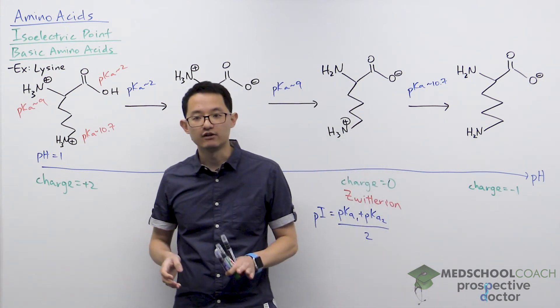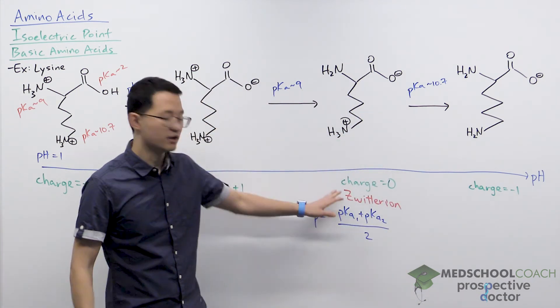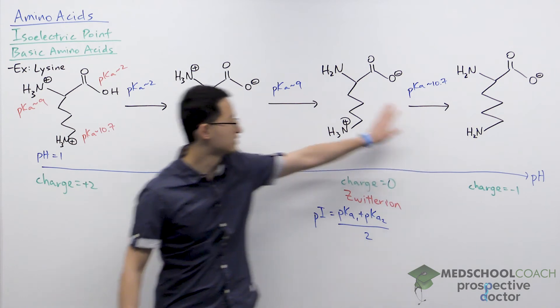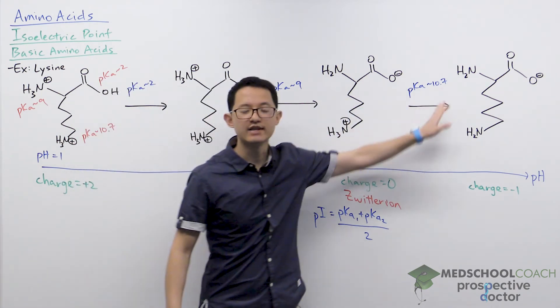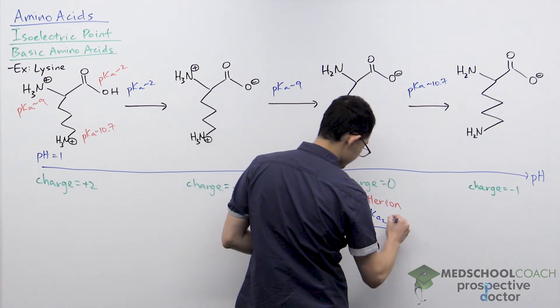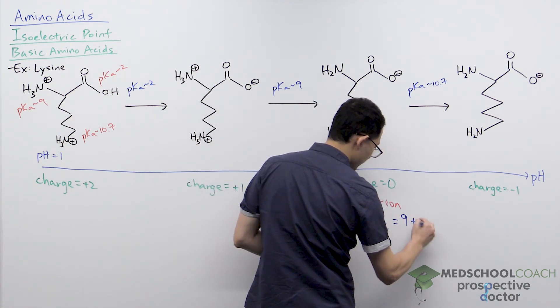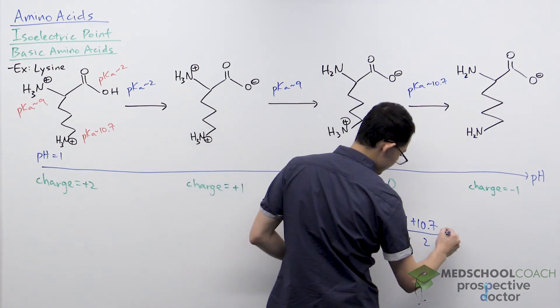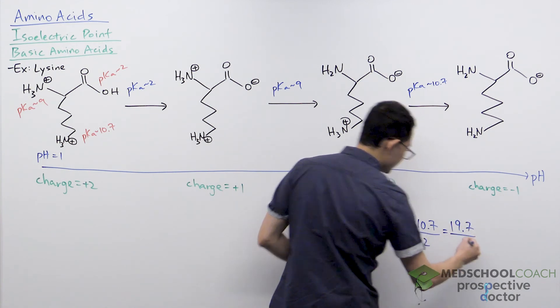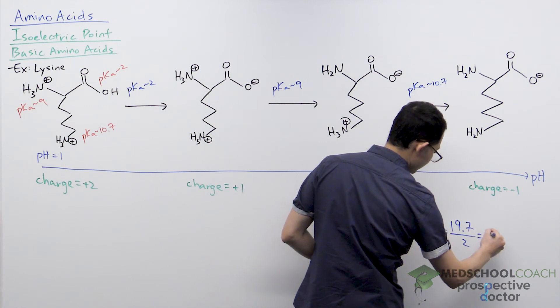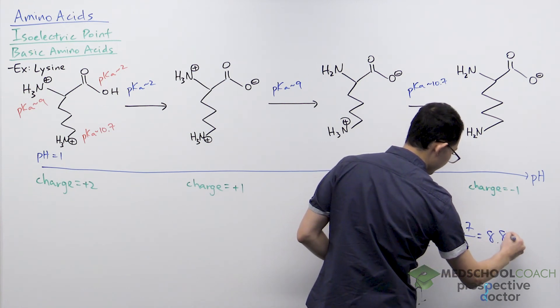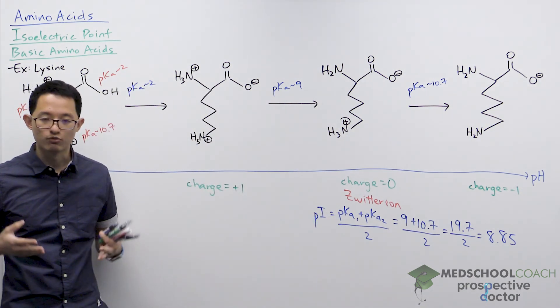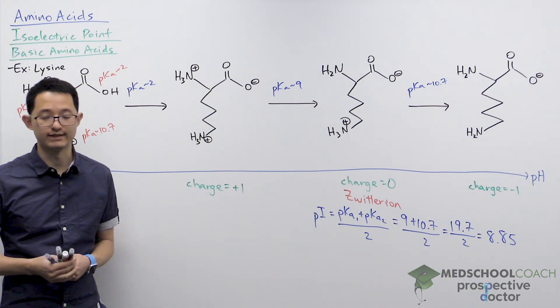As I mentioned in the last video, the correct approach is to look for your zwitterion and then take the pKa value on either side, which in this case are 9 and 10.7. So if we plug in these two values, 9 as well as 10.7, we can add that up and divide it by 2. This is going to be equal to 19.7 divided by 2, which is going to give us a value of 8.85. That's the pH value at which your lysine molecule is 100% in its zwitterion form in solution.